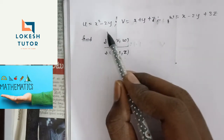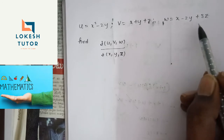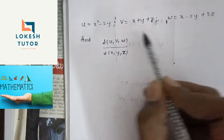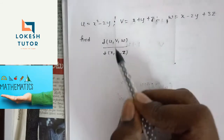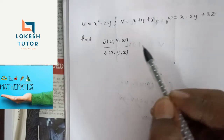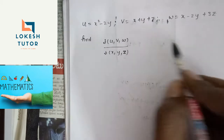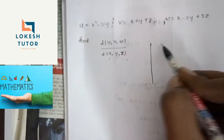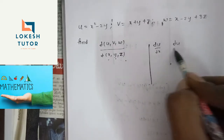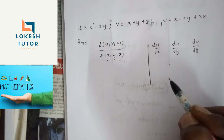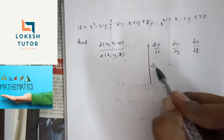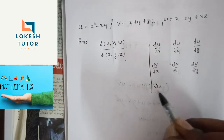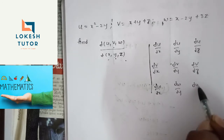So, u is equal to x square minus 2y, v is equal to x plus y plus z, w is equal to x minus 2y plus 3z. What we are going to find is the Jacobian: ∂(u,v,w) by ∂(x,y,z). The matrix includes ∂u/∂x, ∂u/∂y, ∂u/∂z in the first row; ∂v/∂x, ∂v/∂y, ∂v/∂z in the second row; and ∂w/∂x, ∂w/∂y, ∂w/∂z in the third row.